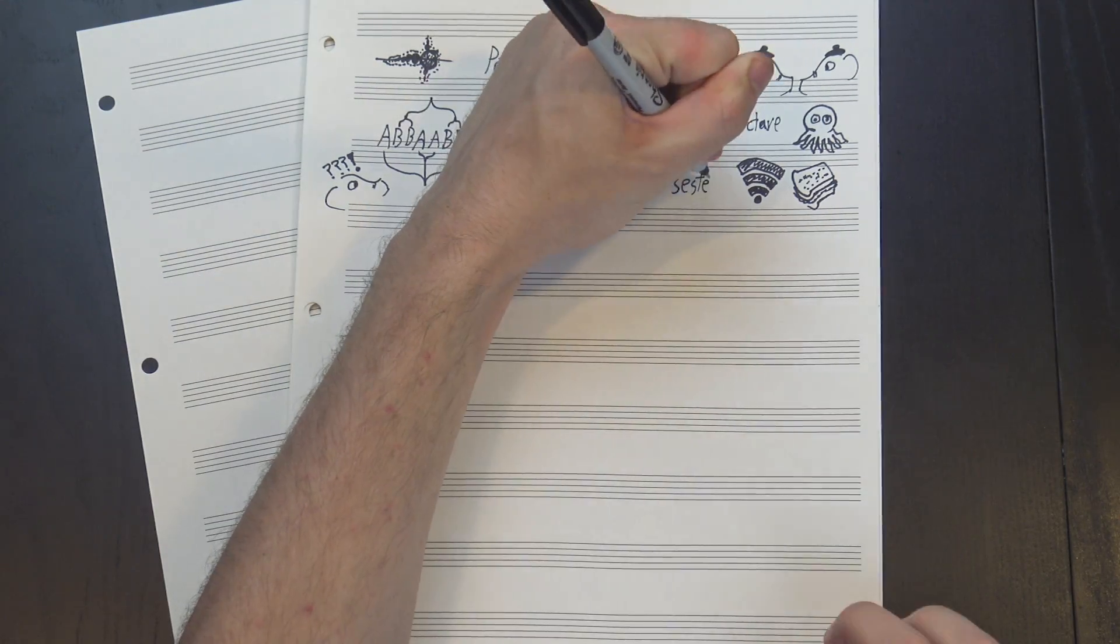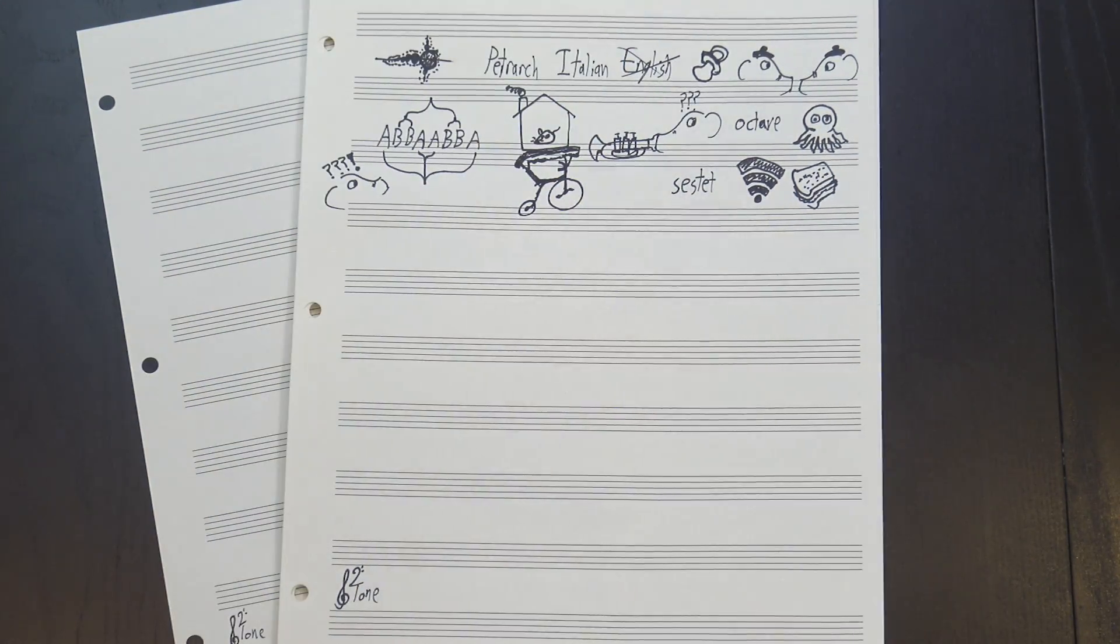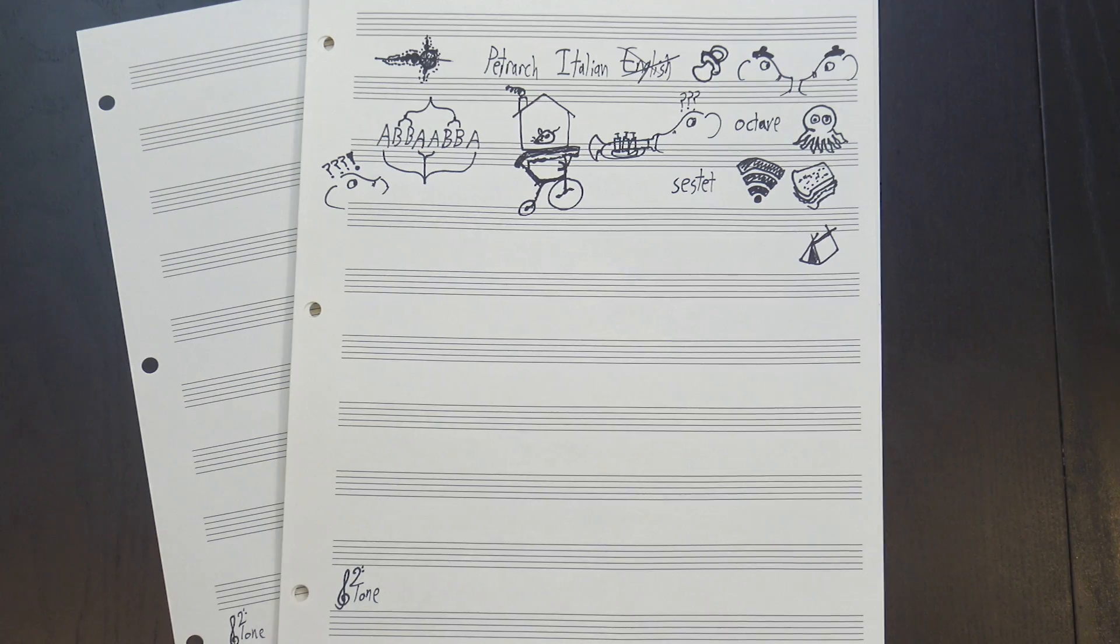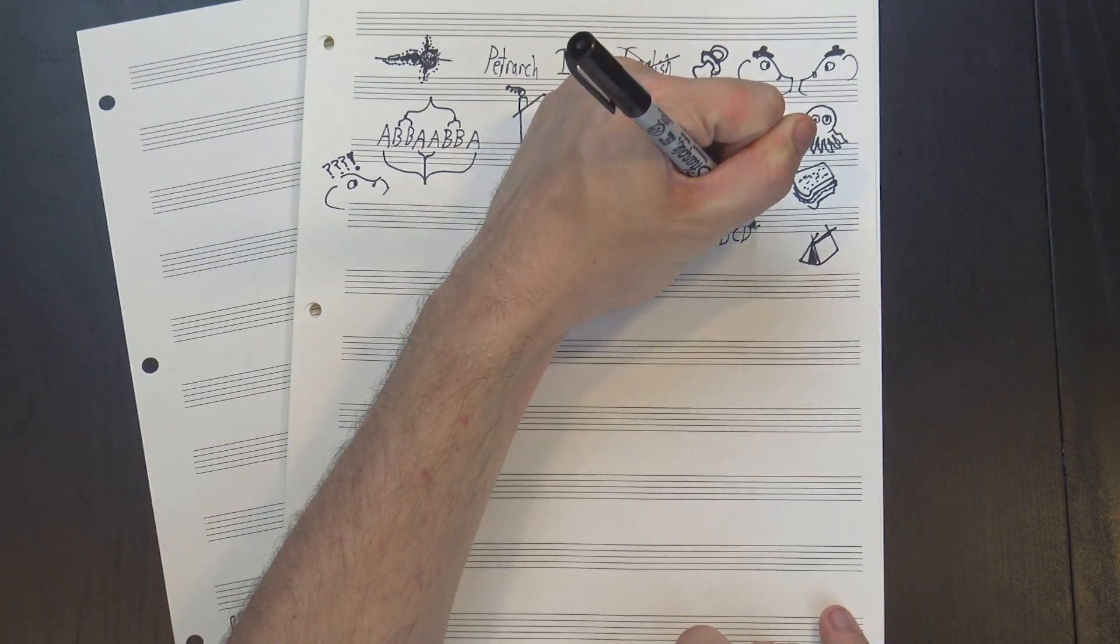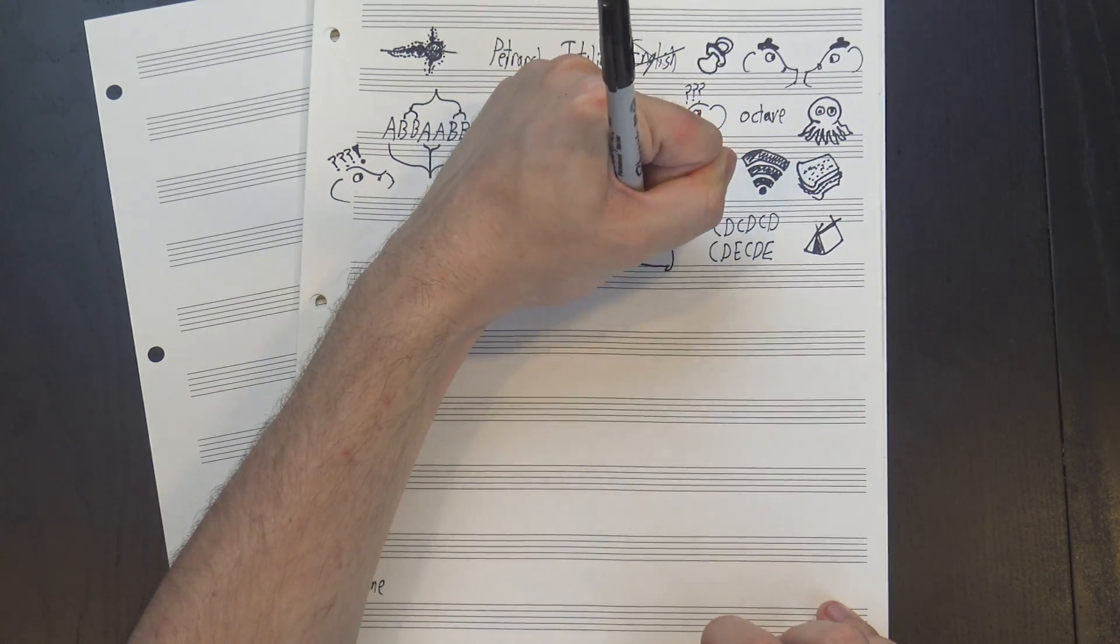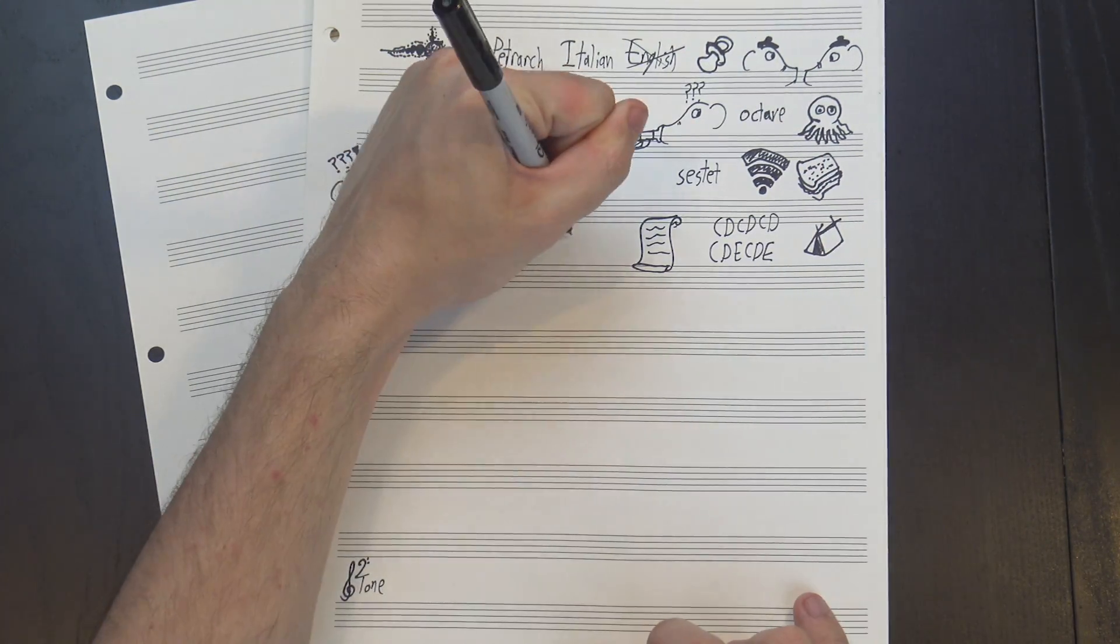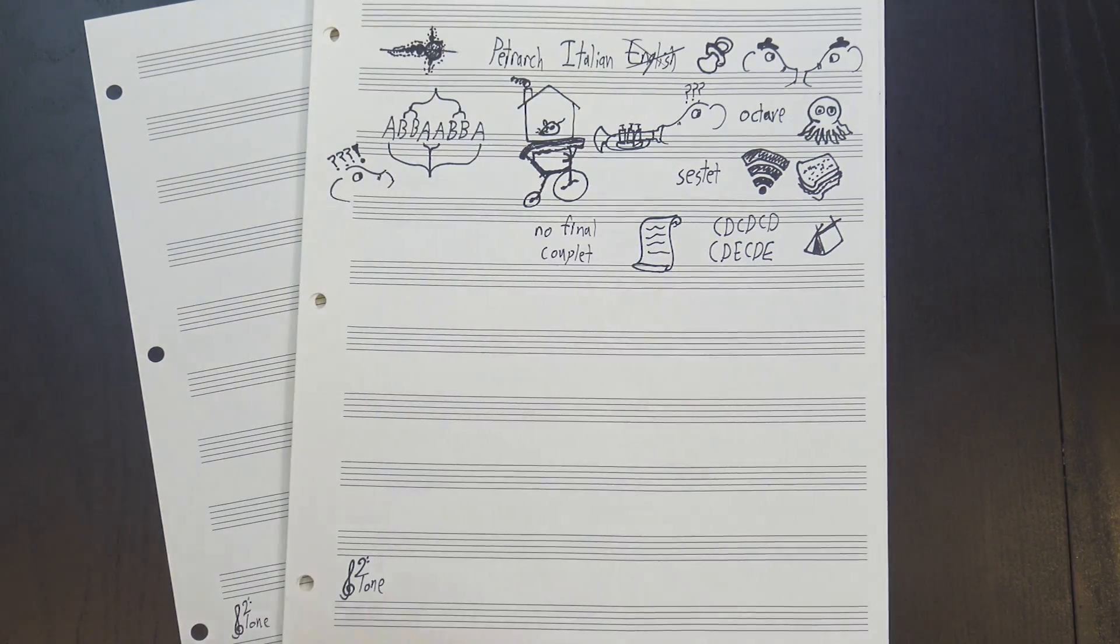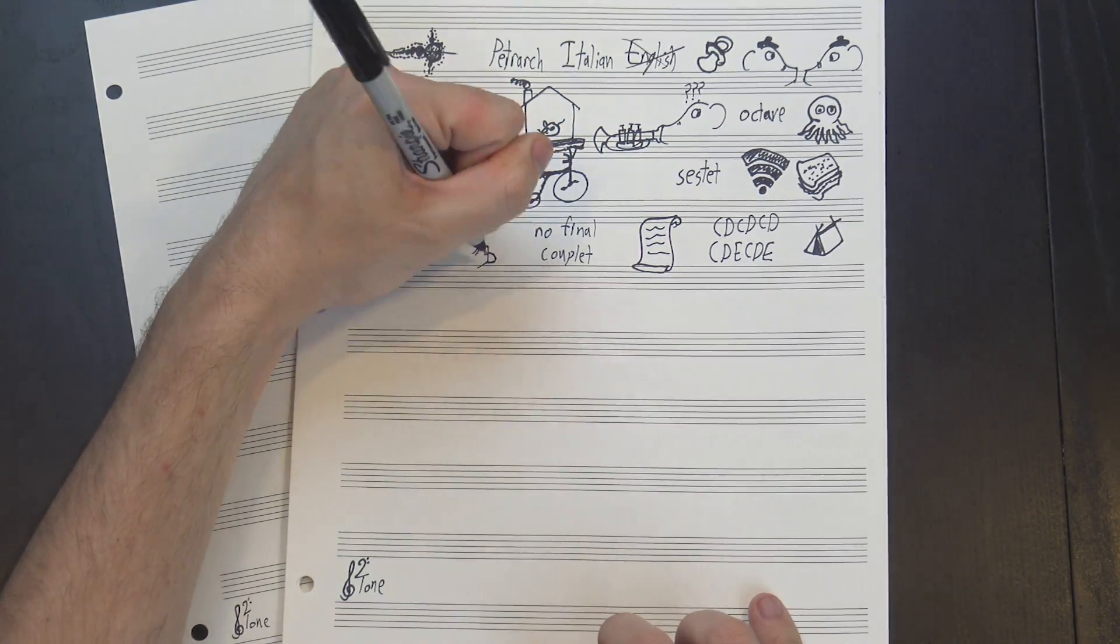The second half is what's known as the sestet, which covers the remaining six lines. Here, the structure is looser. Sometimes they have two rhymes, like the form CD CD CD, and sometimes they have three, like CD E CD E. There's no hard and fast rules as to how this part should be arranged, although technically you're not supposed to end with a couplet. People did it anyway, though, because poets are the original punk rockers.